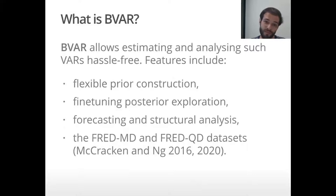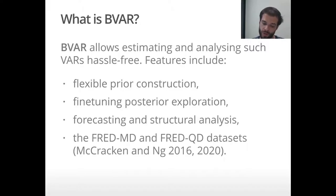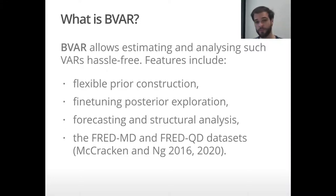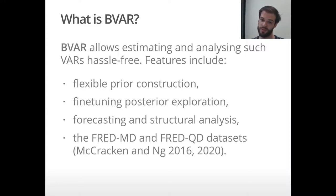These are all in BVAR, which allows you to estimate and analyze such models quite hassle-free. The features include flexible prior construction — the Minnesota prior is always there as a baseline — and you can also include sum of coefficients and single unit root priors, or construct your own dummy priors from the normal inverse Wishart family. You can also fine-tune the posterior exploration of the Metropolis-Hastings step, perform forecasting and structural analysis such as impulse response functions, and the FRED-MD and FRED-QD datasets are included.